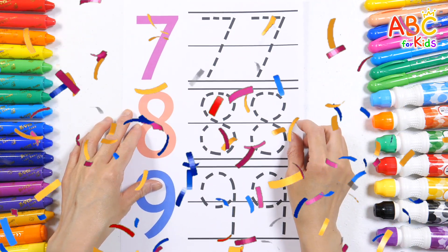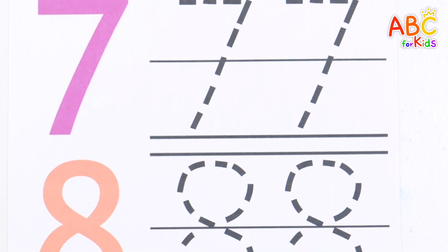Point to the number, read it, and write it down twice along the dotted line.